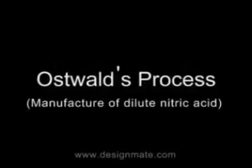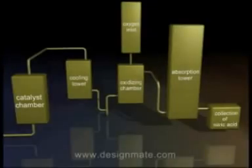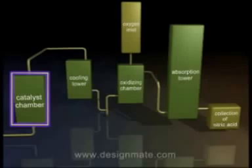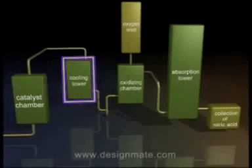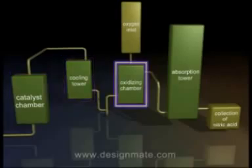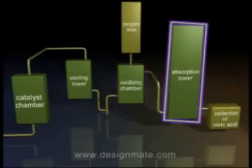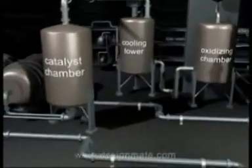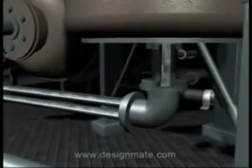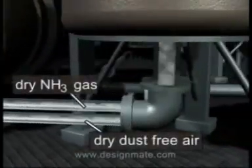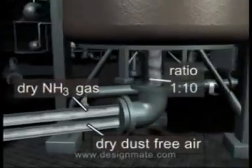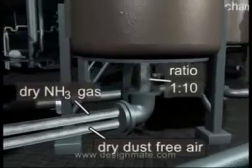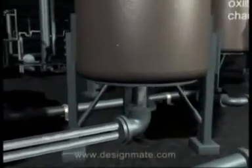In Ostwald's process, there are four chambers: the catalyst chamber, cooling tower, oxidizing chamber, and absorption tower. A mixture of pure dry ammonia gas and dry dust-free air in the ratio of 1:10 is fed into the catalyst chamber.